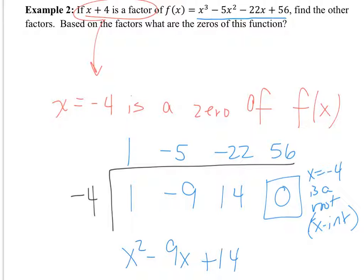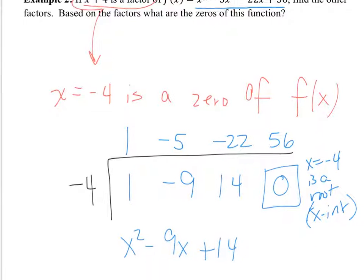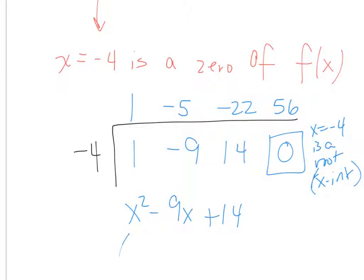Now that it's a quadratic, what can I do with it? The resulting quadratic can itself be factored. That gives x minus 7 and x minus 2. So I have x plus 4, x minus 7, and x minus 2 — three factors total. Why three? Because the amount of factors you can get is at most equal to the degree of the polynomial. This is a cubic, so at most three factors.